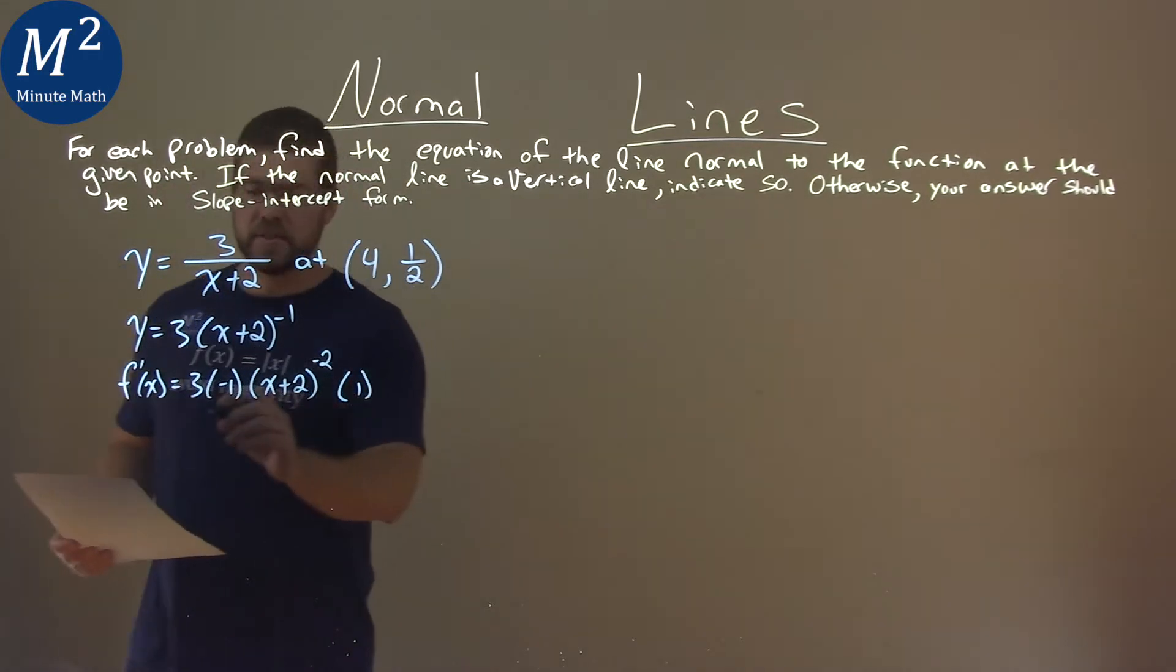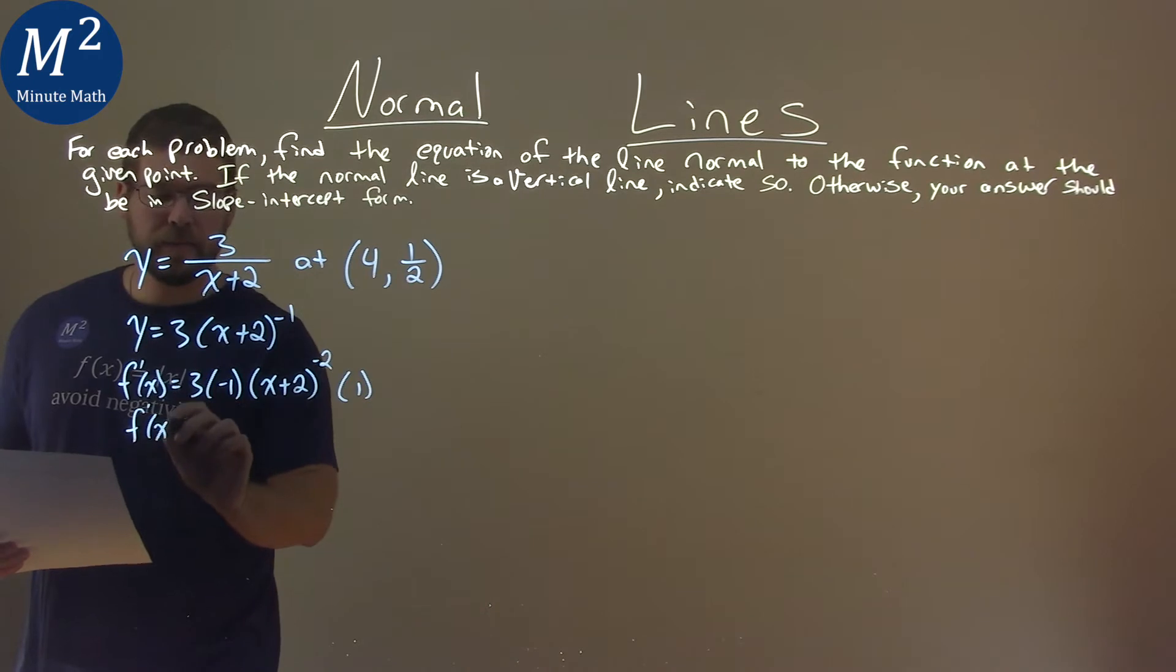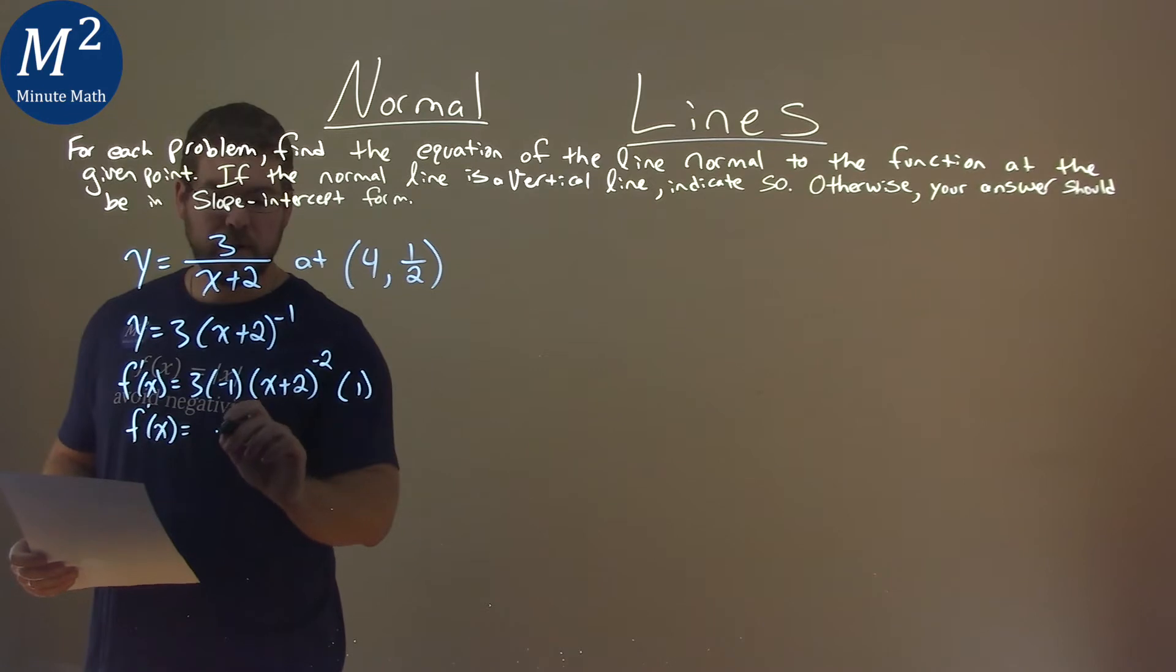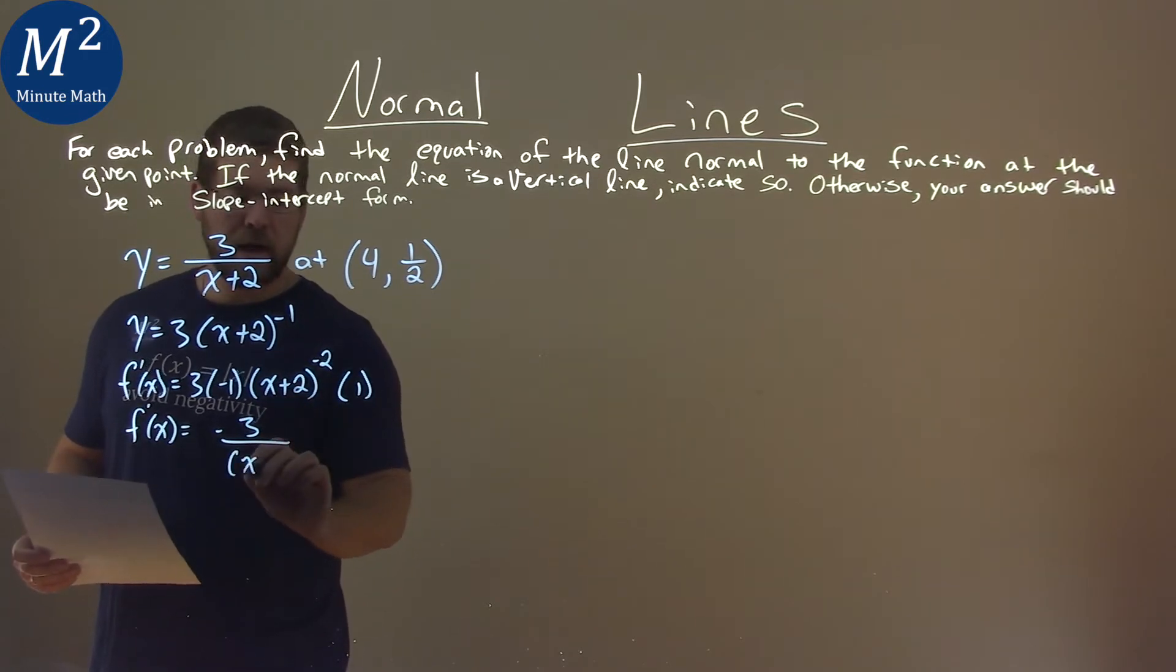From there, let's go simplify. f prime of x here is equal to 3 times negative 1 times 1, which is a negative 3, over, let's bring this back down to the denominator, x plus 2, to the positive 2 power.